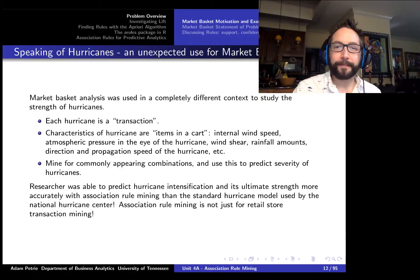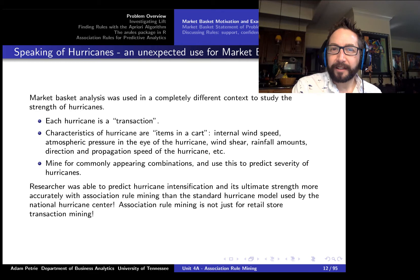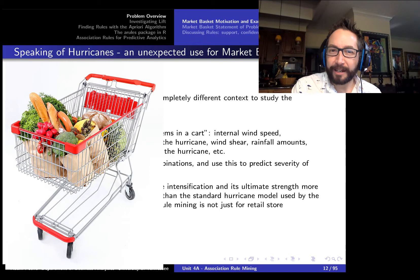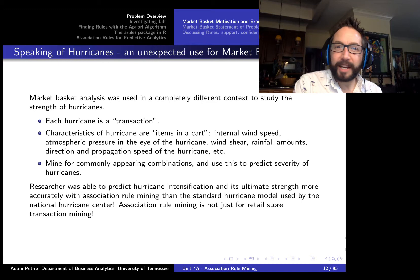And actually, speaking of hurricanes, there's been other applications of market basket analysis that extend well beyond just studying transactional behavior. And I think one of my favorite examples is using market basket analysis to come up with a better hurricane forecasting model than even the National Weather Service had at the time. So how did this proceed? Well, they treated each hurricane like a shopping cart and the characteristics of those hurricanes as like items in the cart. So initial wind speed, the direction, those are like having pop tarts in your cart or not, beer in your cart or not, if the wind speed exceeded a certain threshold or not, etc.